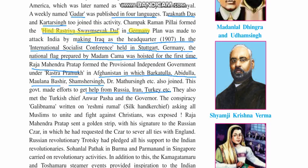Dr. Mathra Singh also joined this government. They made efforts to get help from Russia, Iran, and Turkey to fight against the British. They also met the Turkish chief Anwar Pasha and the governor of that time. There may be a question in your mind: why were all these countries helping the Indian revolutionaries? It was because the British were also ruling in these parts of the world, and these countries had also been hurt by the British during the First World War.